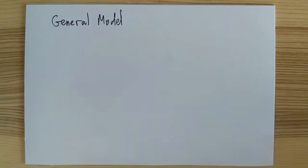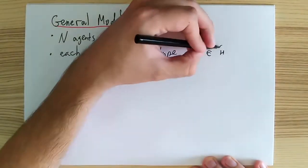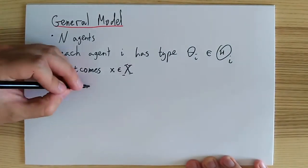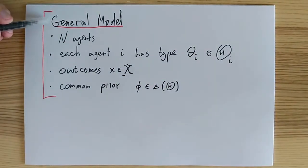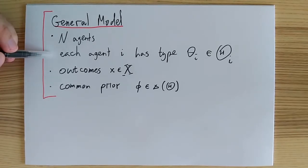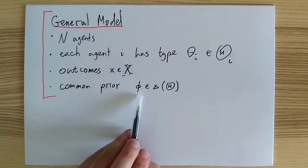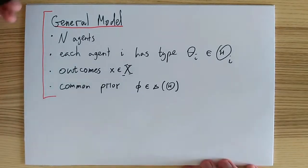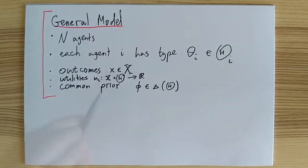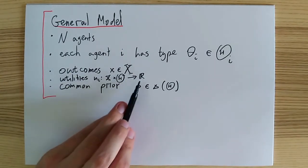As with dominant strategy implementation, we define this new concept within the framework that we call the general model. This framework is defined in terms of a set of agents, a set of types for every agent, an arbitrary set of outcomes that we are choosing among, coupled with a social choice function, and a common prior belief over type profiles shared by all agents. One thing I forgot is agents' utility functions that map outcomes and type profiles into utility values.